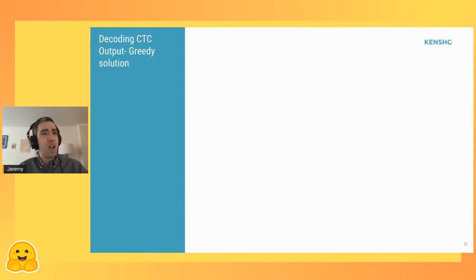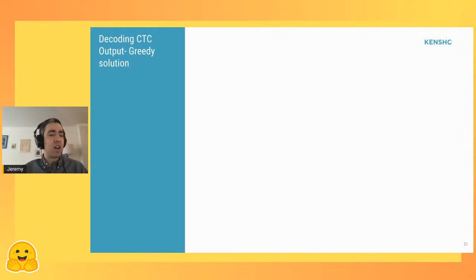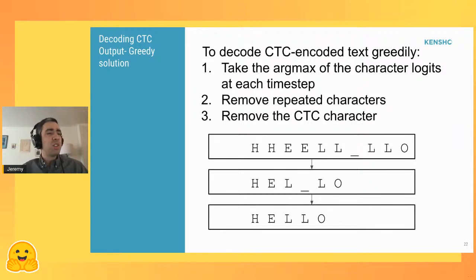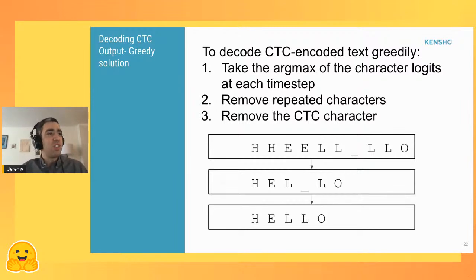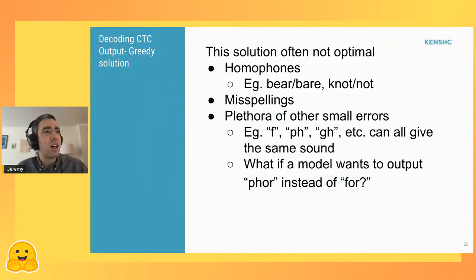Now we need to decode our CTC output. There's a simple greedy way: take the argmax of the character logit at each time step — just take the most likely character at each time step — then run this two-step process of removing repeated characters and then removing the CTC blank character. This is very simple and easy to code up.